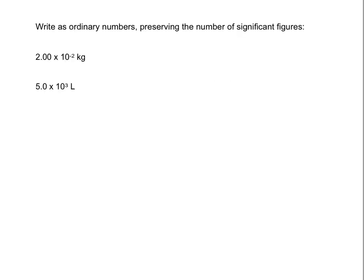We're going to take some numbers out of scientific notation and write them as ordinary numbers, preserving the number of significant figures. Look at the beginning part — that tells you how many sig figs. Most of the time you'll see decimal points, so most of the time you'll be counting to the right. This has three significant figures, so when we take it out of scientific notation, we still want to see three significant figures. With a negative power of 10, we move the decimal point to the left, because it's like dividing. I don't want to just write 0.02 — that's only one significant figure — I'm going to add in my zeros so I have three significant figures.